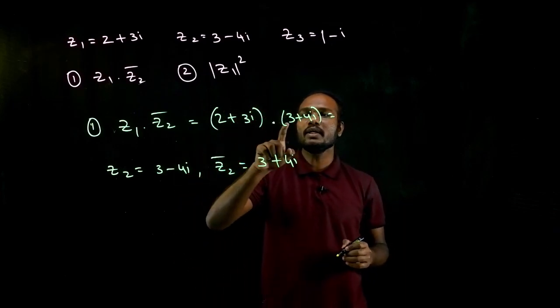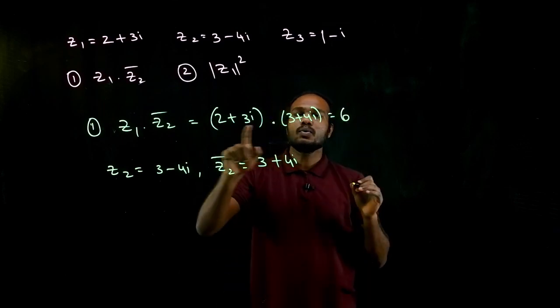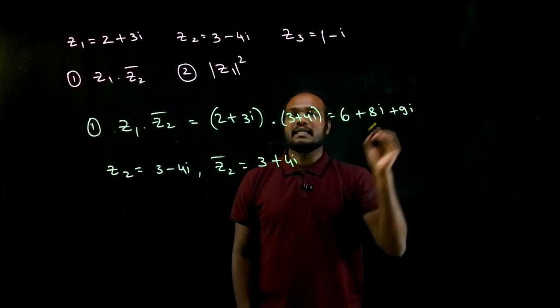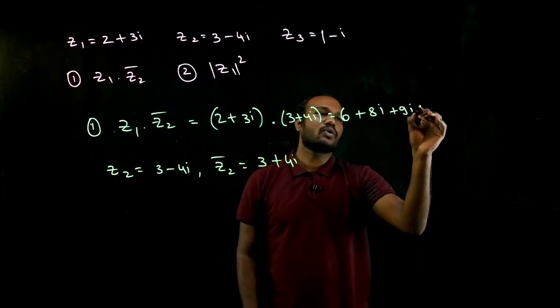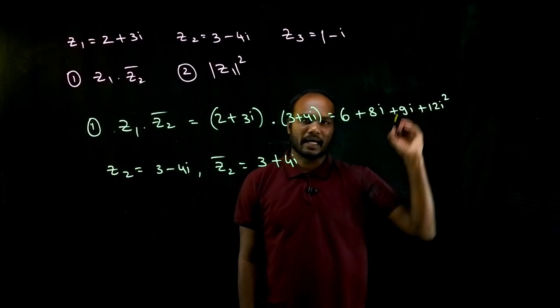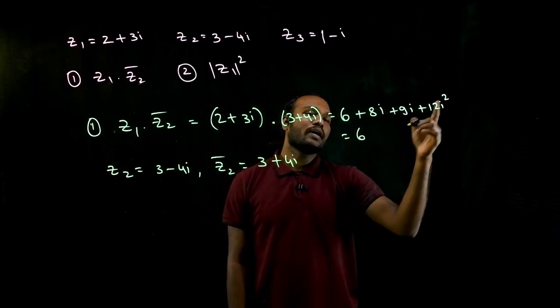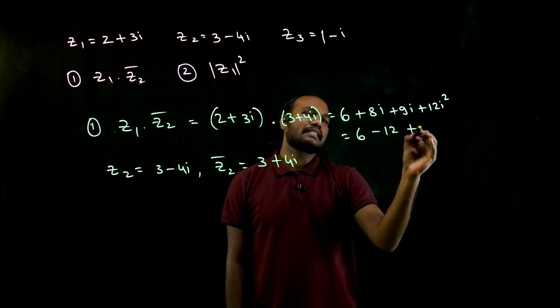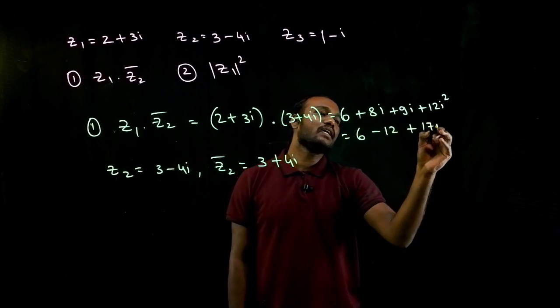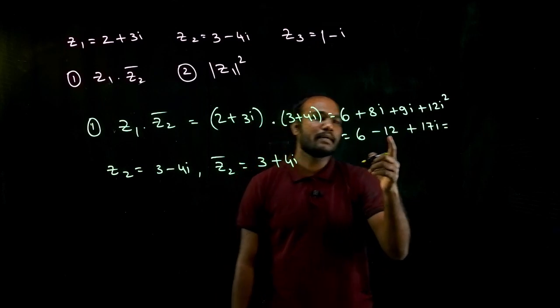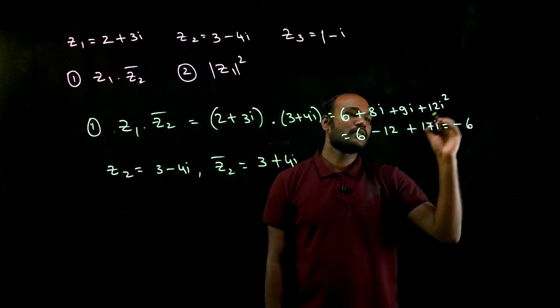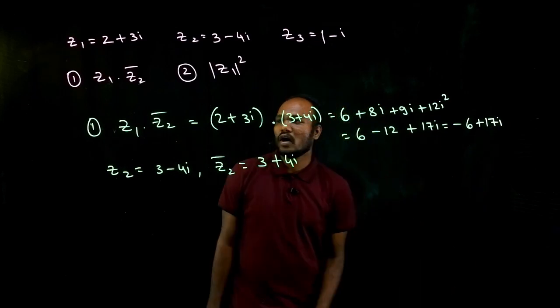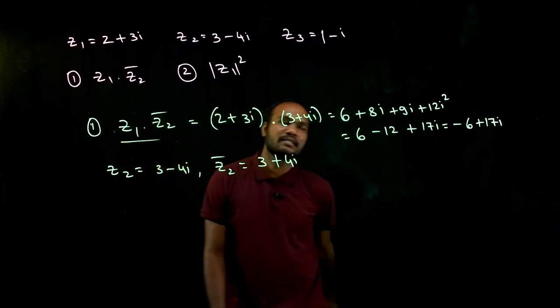So I have to take this number, 3 plus 4i. How much do I get? Just have to multiply: 2 into 3 is 6, 2 into 4 is 8i. Again, 3 into 3 is 9i, and 3 into 4 is 12i squared. i squared value is minus 1, so 6 minus 12 plus 8 plus 9 is 17i. So how much do I get? 6 minus 12 is minus 6 plus 17i. This is the value of z1 times z2 bar.